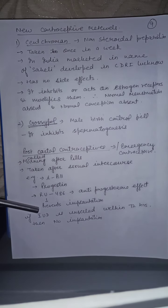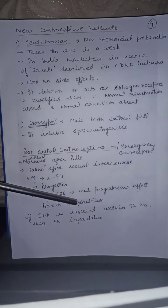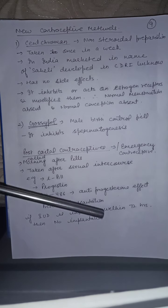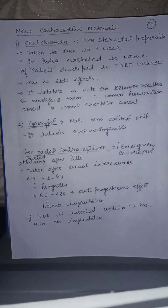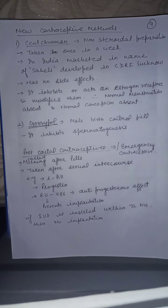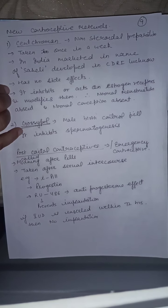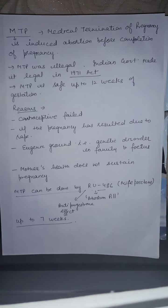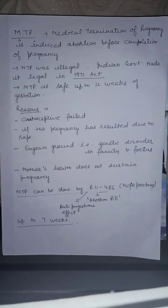RU486 has an anti-progesterone effect and is also used in abortions — it prevents implantation. If an IUD is inserted within 72 hours of intercourse, no implantation will occur. This is another method to prevent conception after intercourse.